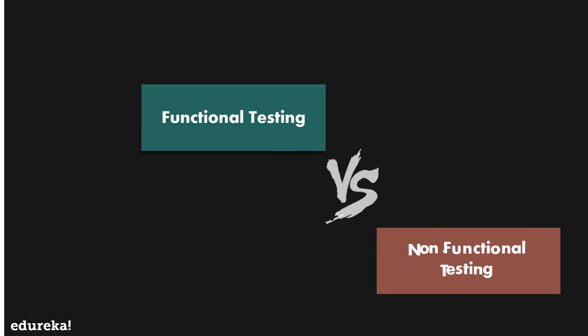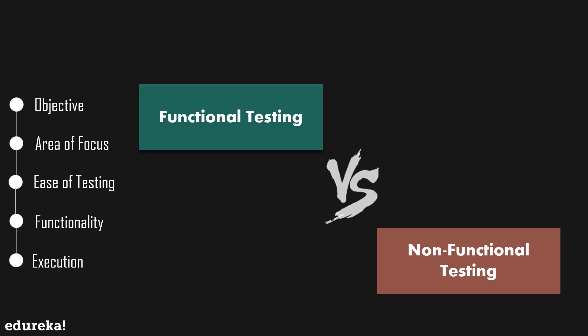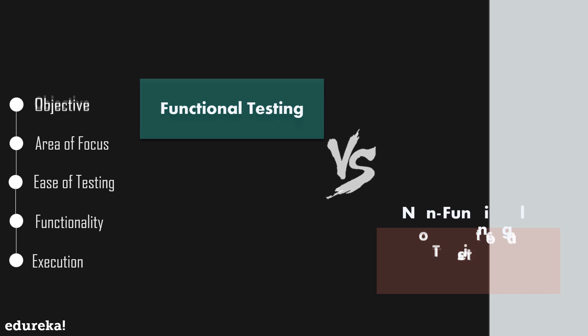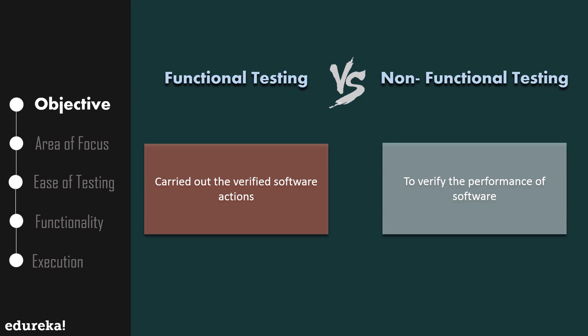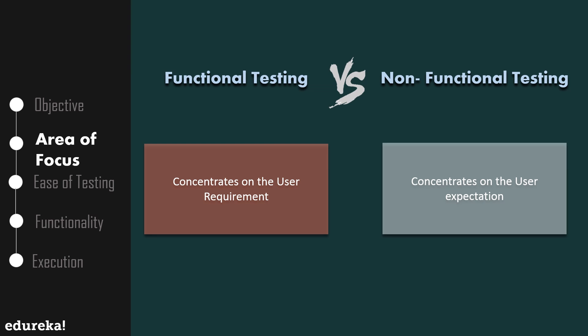Now let's have a look at the differences between functional testing and non-functional testing, looking at parameters such as objective, area of focus, ease of testing, functionality, and execution. The first parameter is the objective. In functional testing, it is carried out to verify the software actions, whereas in non-functional testing it is used to verify the performance of the software. Regarding area of focus, functional testing concentrates on the user requirement, whereas non-functional testing concentrates mostly on the user expectation.